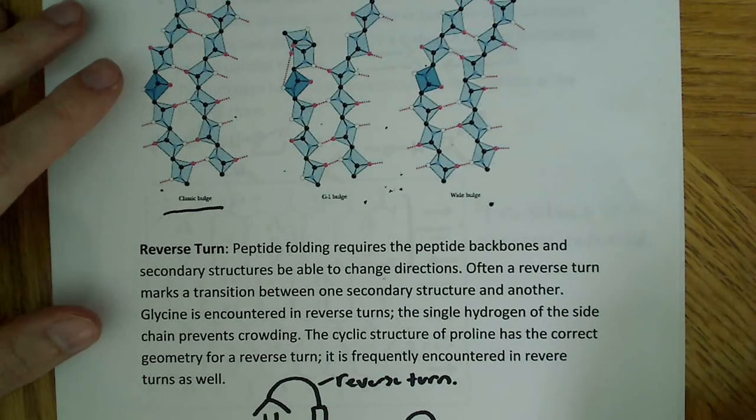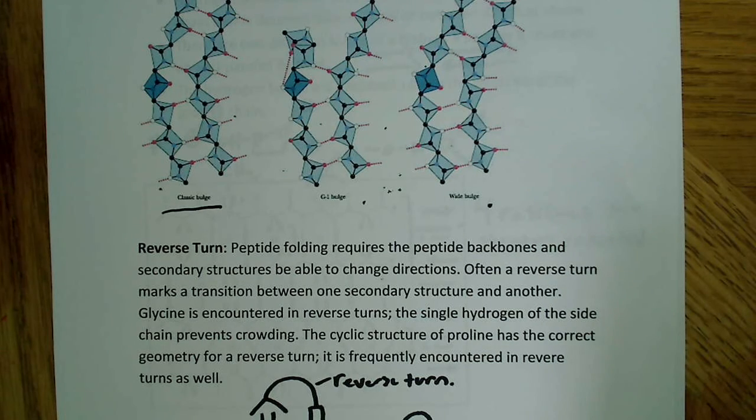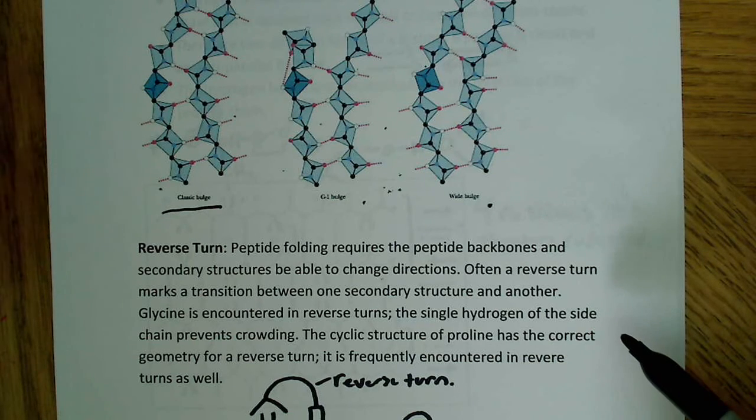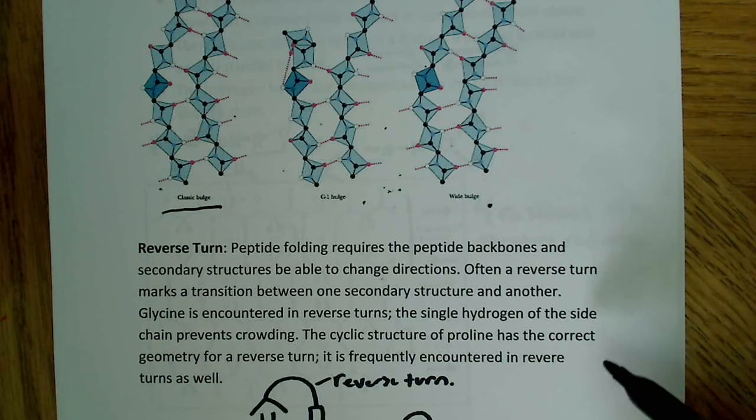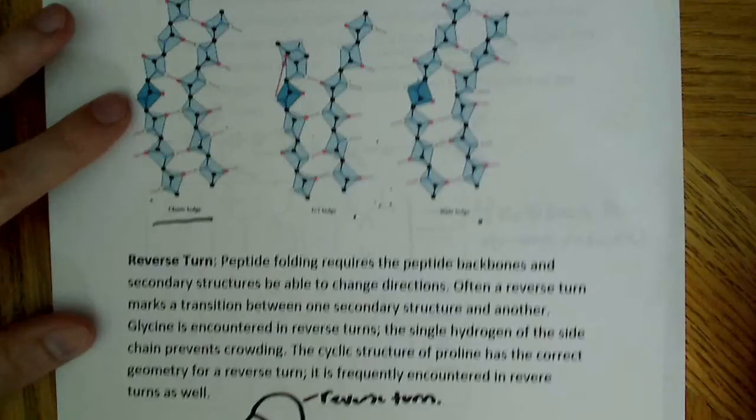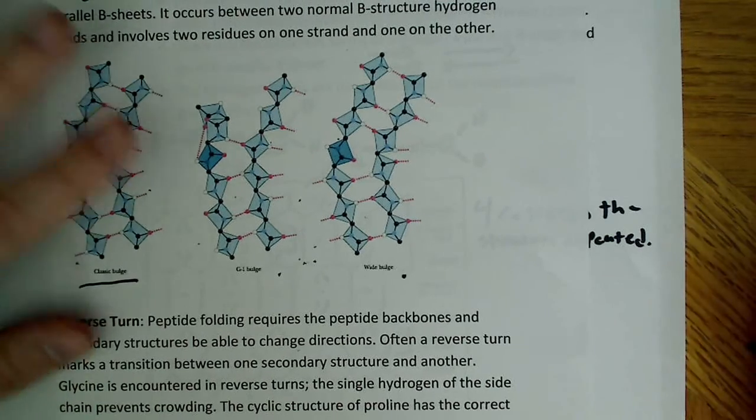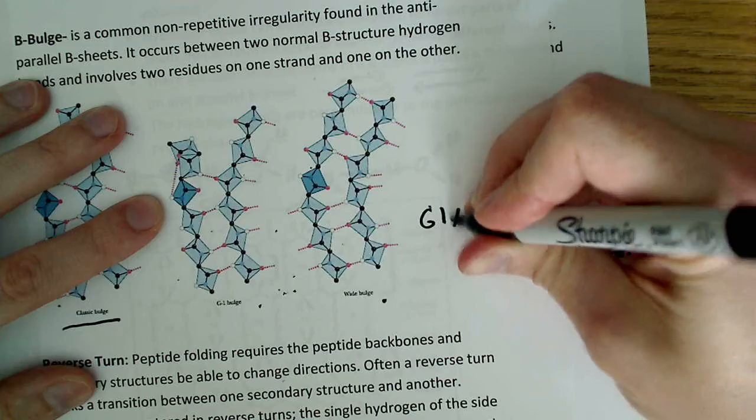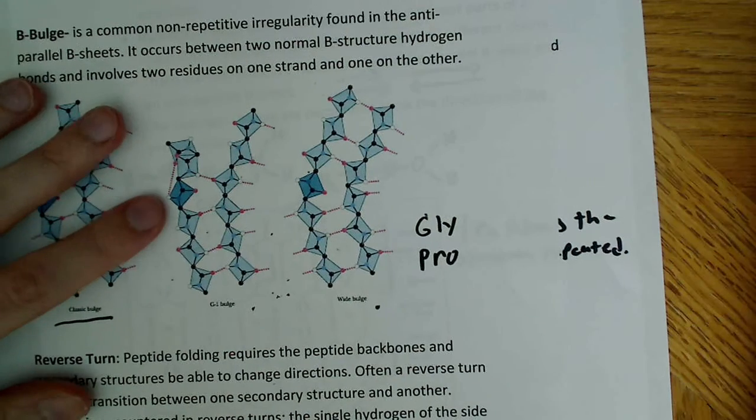I have the reverse turn. Peptide folding requires the peptide backbones and secondary structures to be able to change directions. Often a reverse turn marks a transition between one secondary structure and another. Glycine is encountered in reverse turns because the single hydrogen on the side chain prevents crowding. The cyclic structure of proline has the correct geometry for a reverse turn. It is frequently encountered in reverse turns as well. We should know that we're going to frequently encounter glycine and proline in the reverse turns.